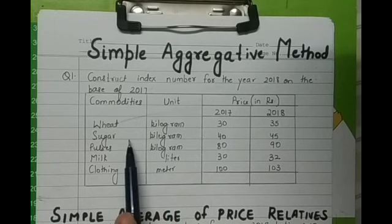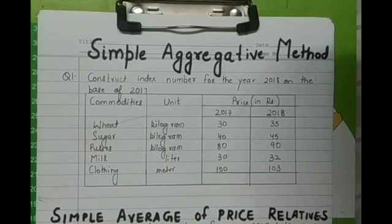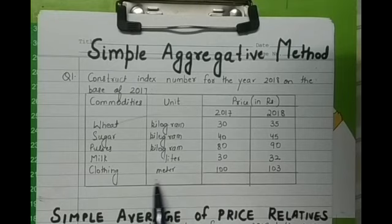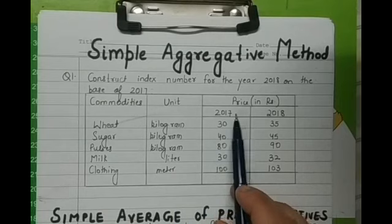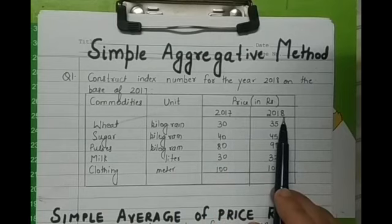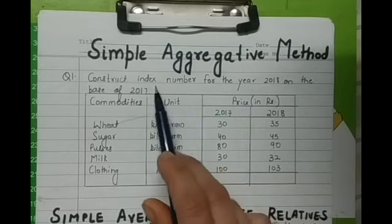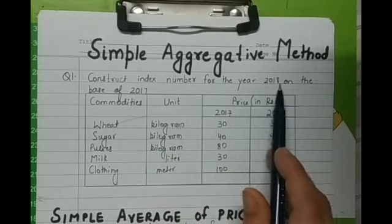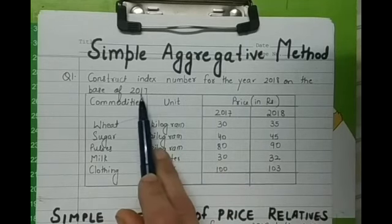Wheat measured in kilogram, sugar measured in kilogram, pulses measured in kilogram, milk measured in liter, and clothing measured in meter. Now you have been given the prices of the two years 2017 and 2018, and you have been asked to construct an index number for the year 2018 on the base of the year 2017.